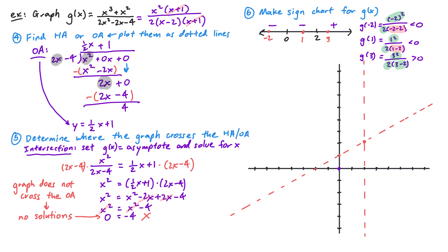Now our sign chart is complete. On the x-axis of our graph, we mark where the function is positive and negative to guide our sketch. From negative infinity to 0 the function is negative (highlighted in red); from 0 to 2 the function is also negative (red); and for x greater than 2 the function is positive (green).